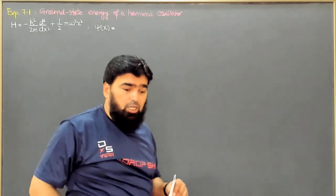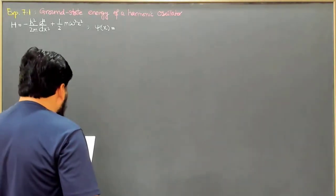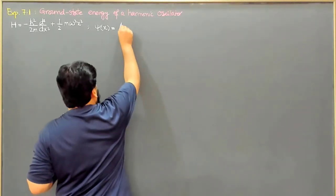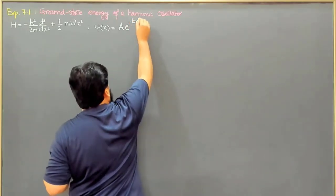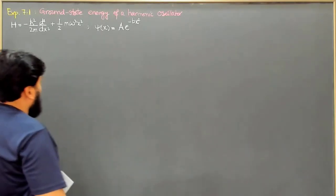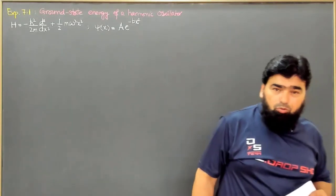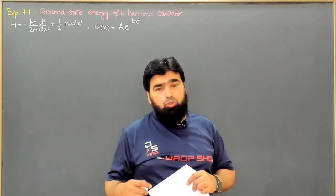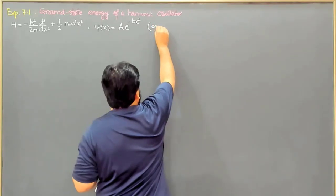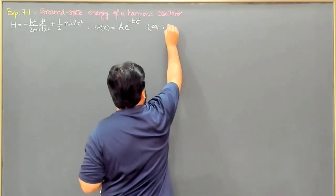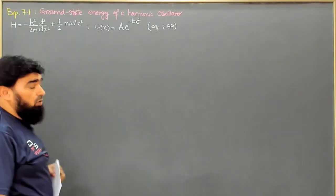We will pick a Gaussian trial function, which is similar to the harmonic oscillator wave function. This is A times e to the power minus b x squared, where A is the normalization constant. This Gaussian function resembles the actual wave function of the harmonic oscillator covered in equation 2.59, and it is our trial function.